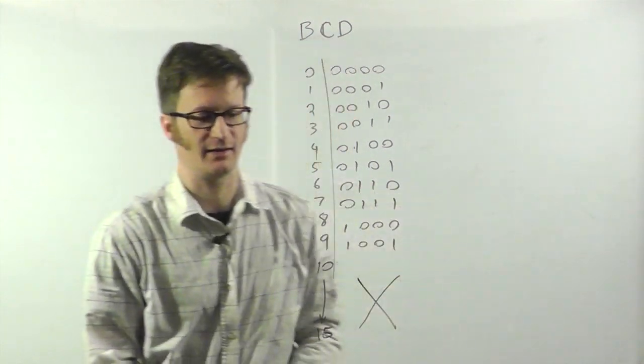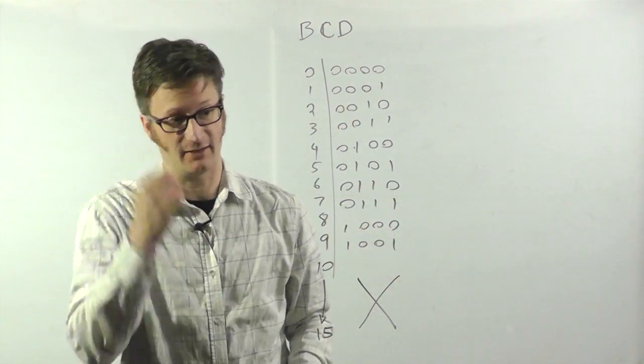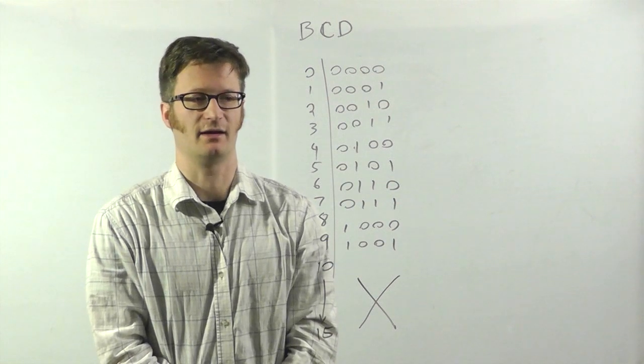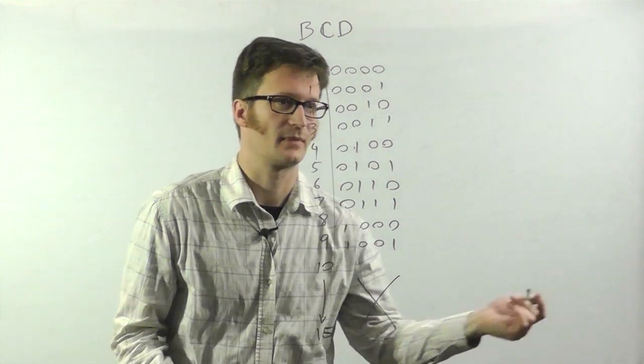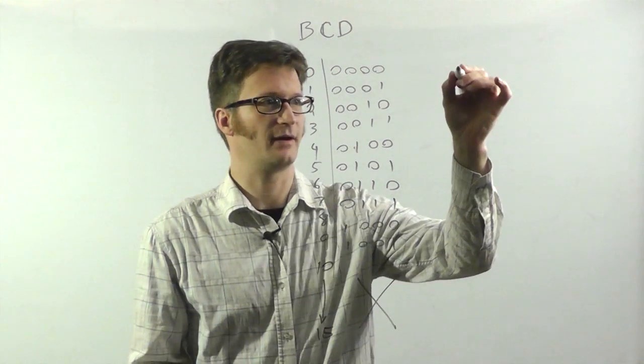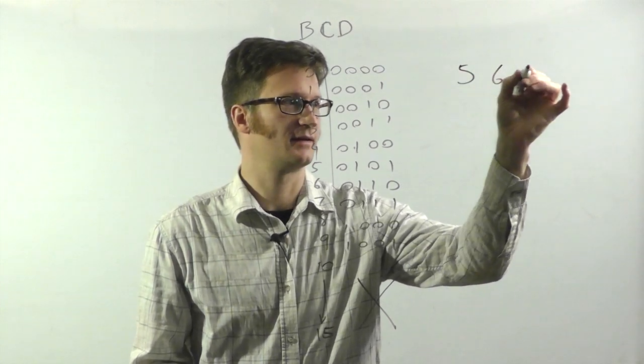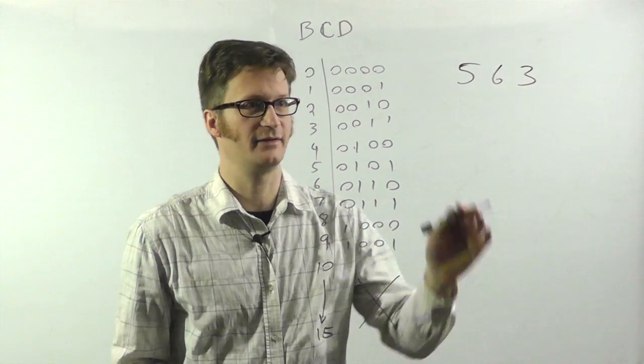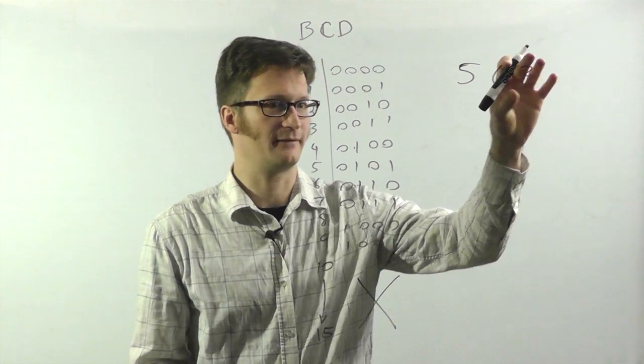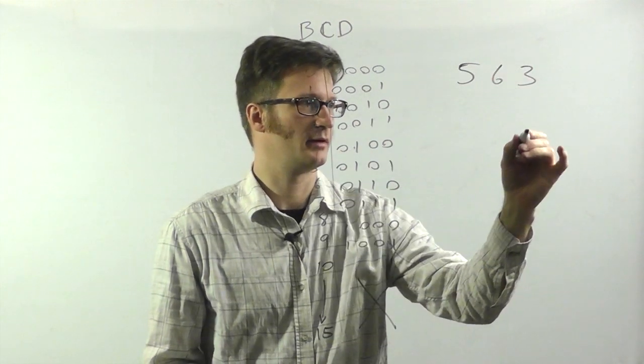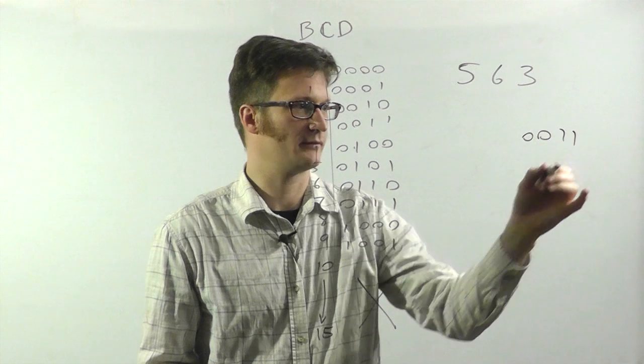But 10 through 15 are actually invalid codes for binary coded decimal. They're just not used. And if you receive a value 10 through 15, you'll know that you have an error somewhere. So if I want to encode a value, say 5, 6, 3, all I have to do is take that value and look it up. So 0, 0, 1, 1 for 3.